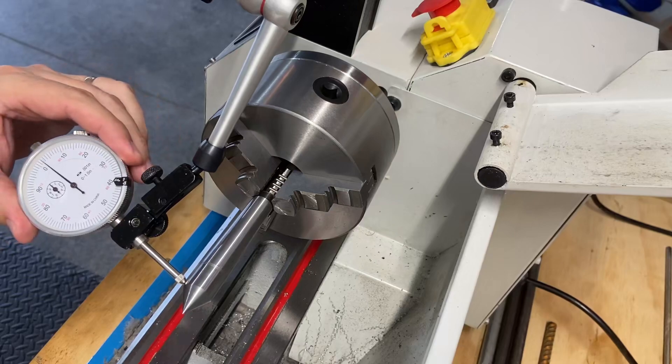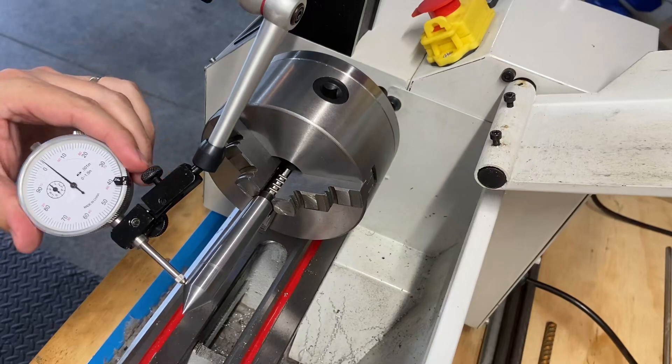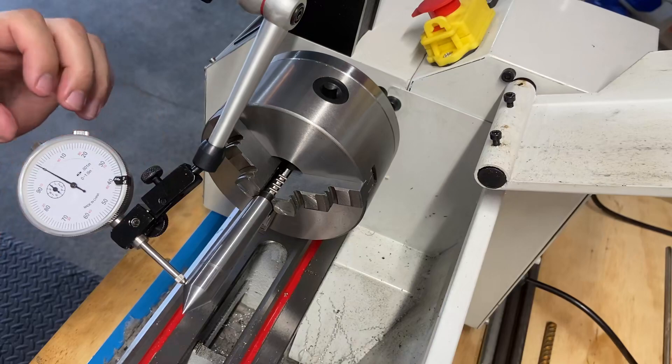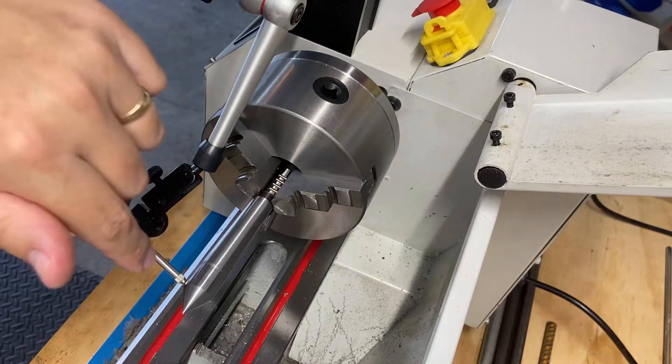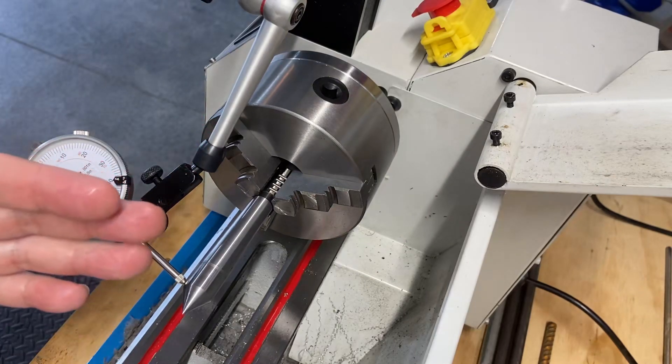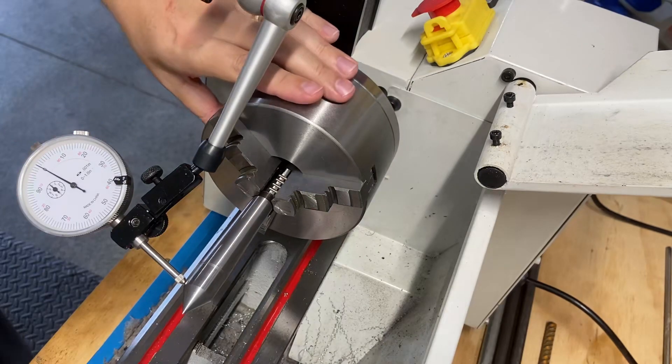So what we're going to do - I did get a dial indicator. This is not the best quality one, but it exists and I have it. Let's get that pretty close to zero and we're going to test the runout on this dead center. I'm going to have to tap it and just get it centered, and then we'll bring the tailstock up and just see how close we are and how close I was with my original method, which was flawed.